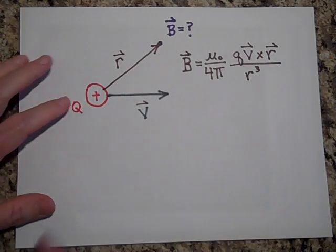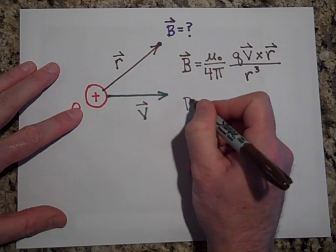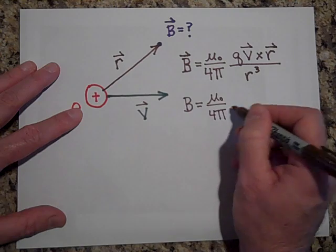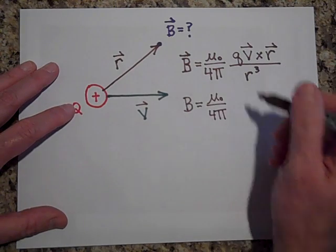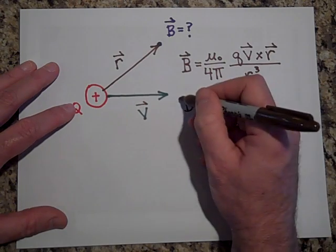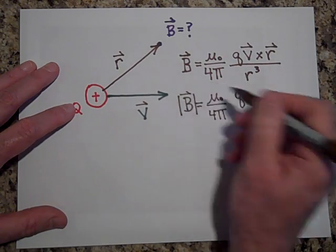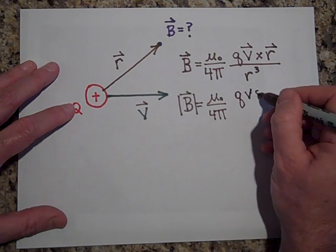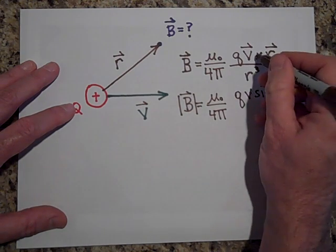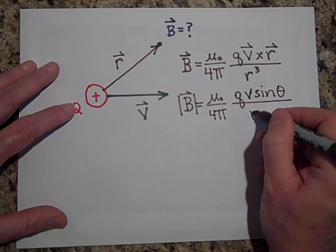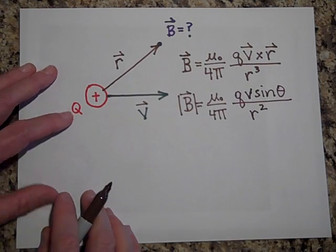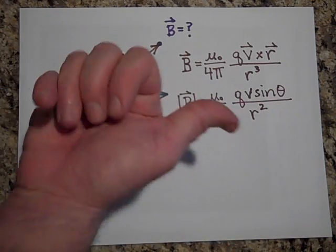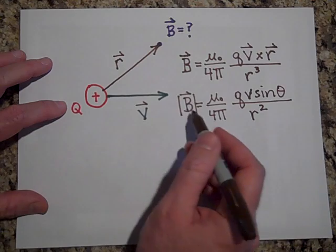So another way of writing this then is sometimes people will do this. They'll say it's equal to mu naught over 4 pi. And you know how the cross product gives you the sine. So you can do Q times, now I'm only talking about the magnitude now. The magnitude of B will be mu naught over 4 pi times Q times V R sine of theta. I'm going to cancel out that R. Sometimes you see it written like this too. This isn't as good because it doesn't give you the direction. Then you need to use your right hand rule to get the direction. But this is the magnetic field that's due to this.